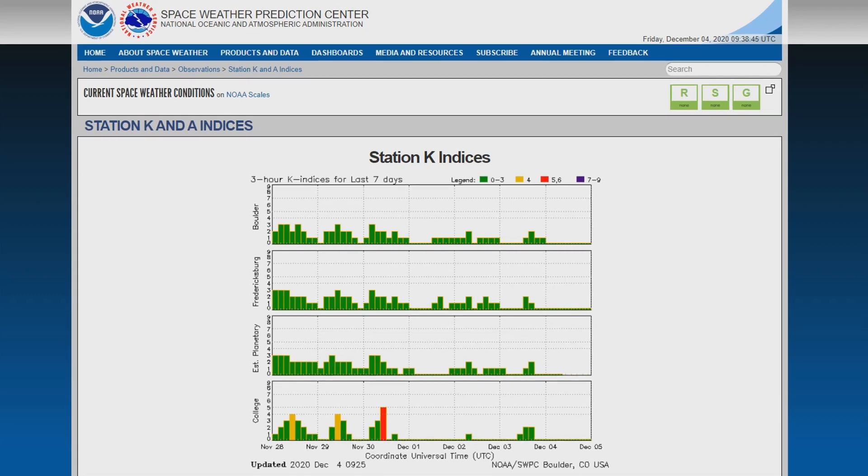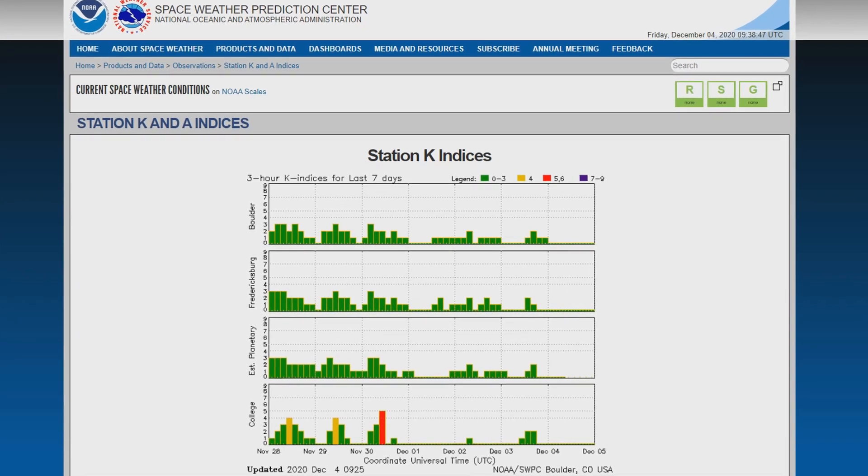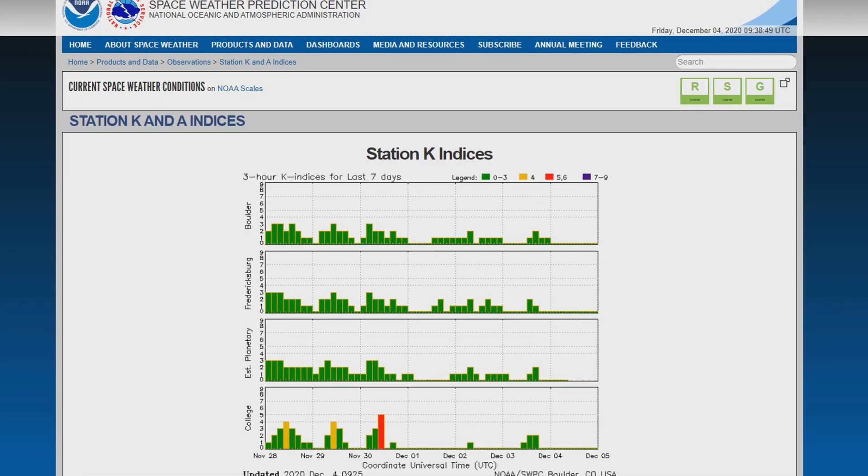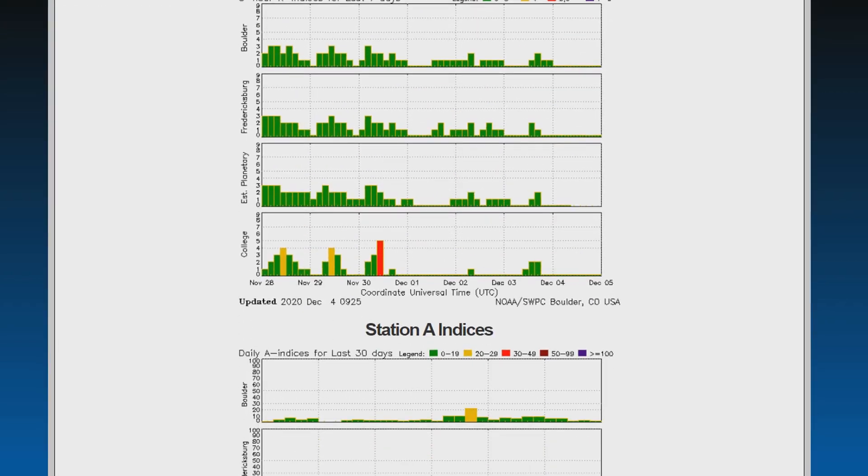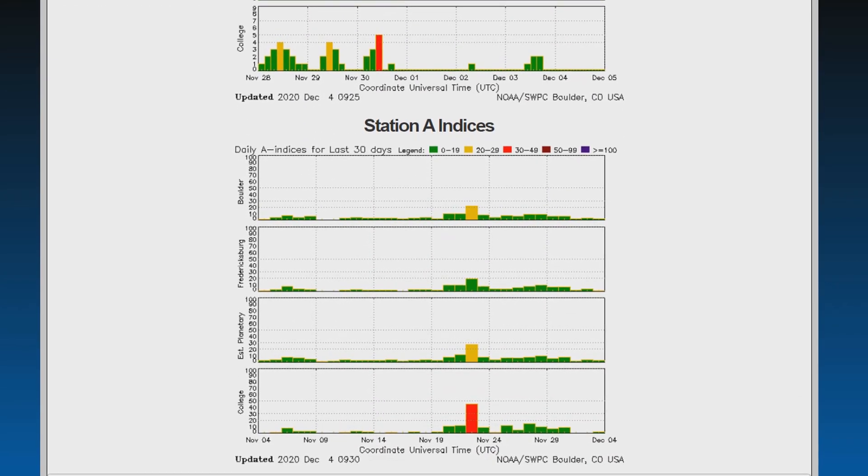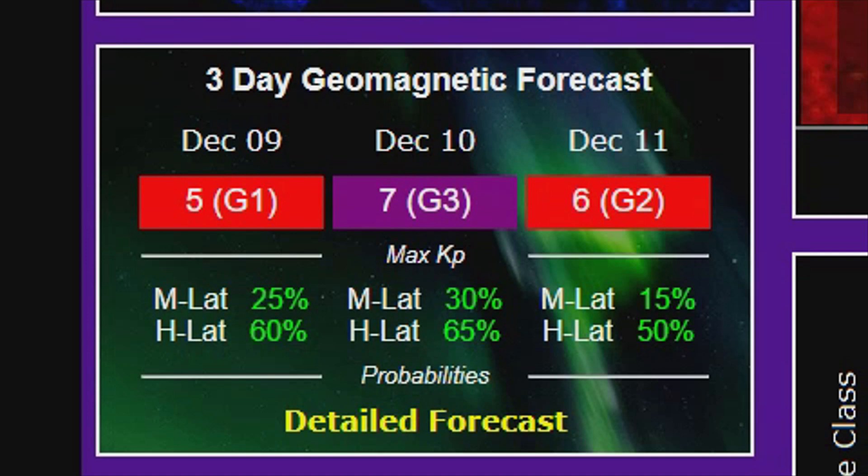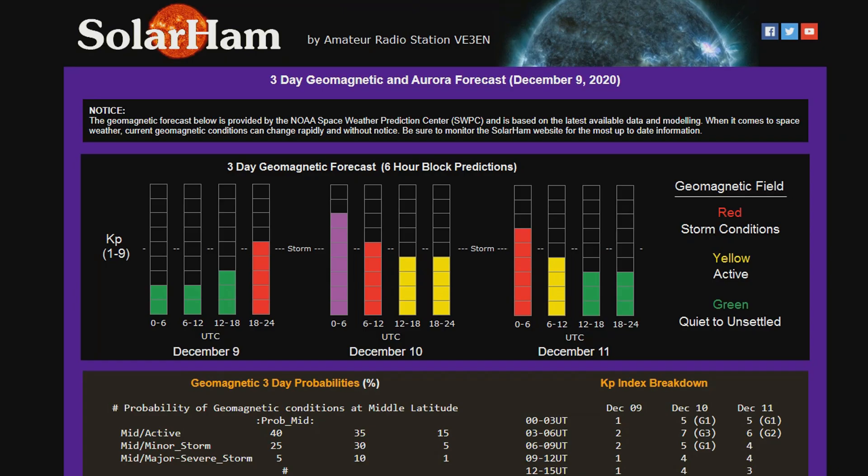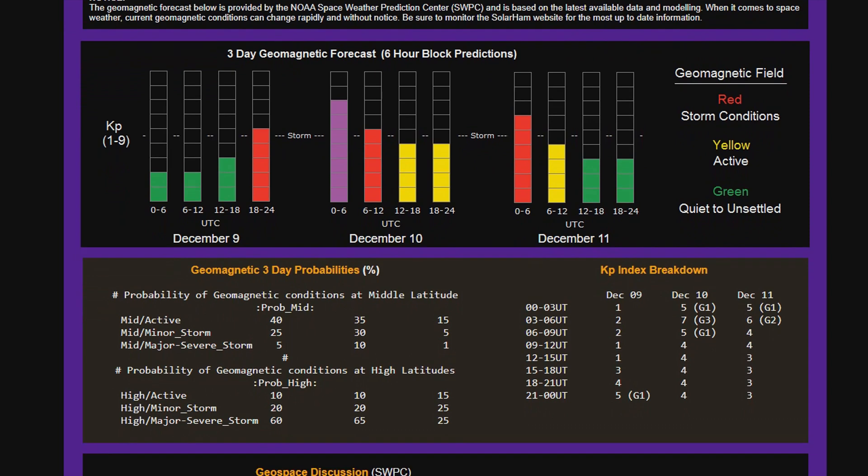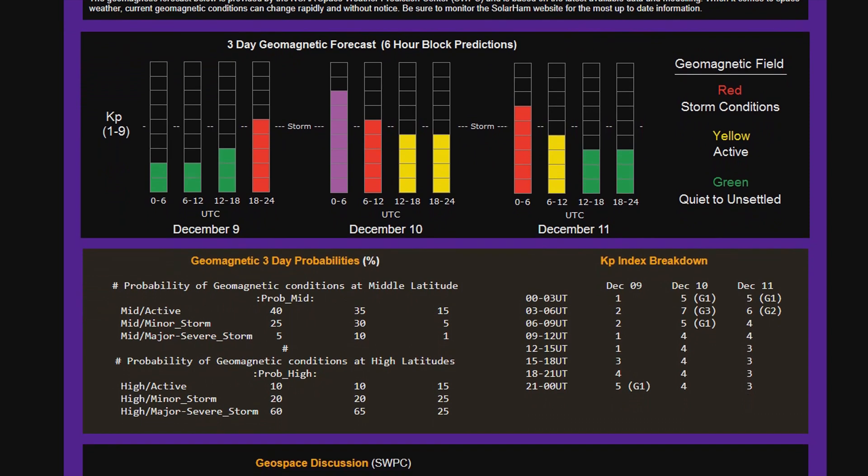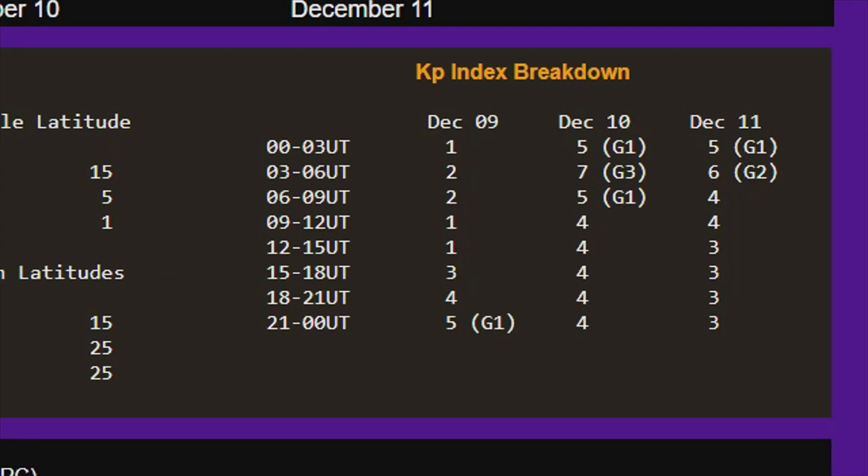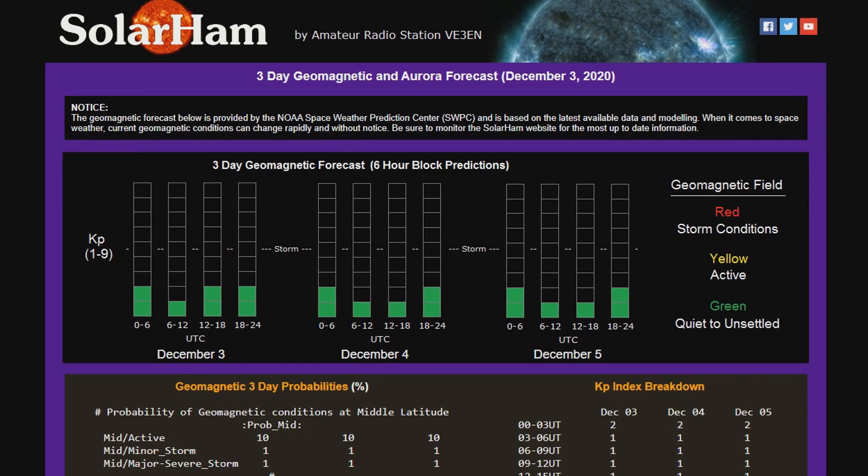To overcome this, the indices are averaged from Northern Hemisphere monitoring stations and Southern Hemisphere monitoring stations to provide the AP index, or the planetary value. Similarly, the KP index is the planetary average of all the K indices at observatories around the world. So the lower the KP index, the better for amateur radio.